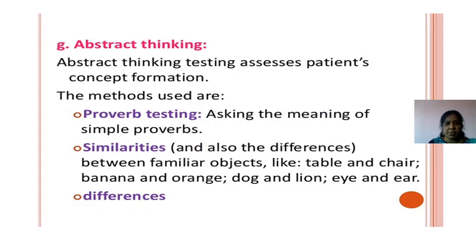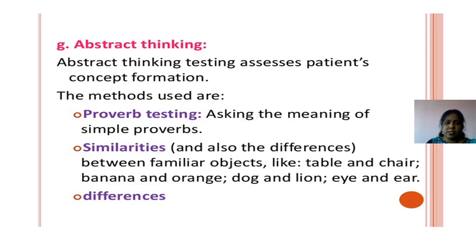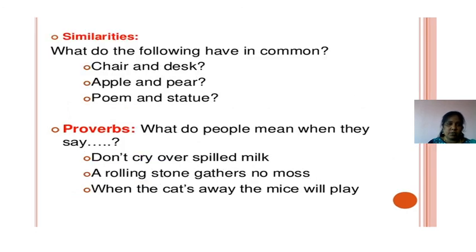Abstract thinking: assess concept formation and problem-solving. Ask about similarities — 'What is similar between a table and chair, banana and orange, dog and lion?' Ask about differences and similarities. Proverbs: 'A rolling stone gathers no moss' or 'Don't cry over spilled milk' — these proverbs are used to assess abstract thinking.